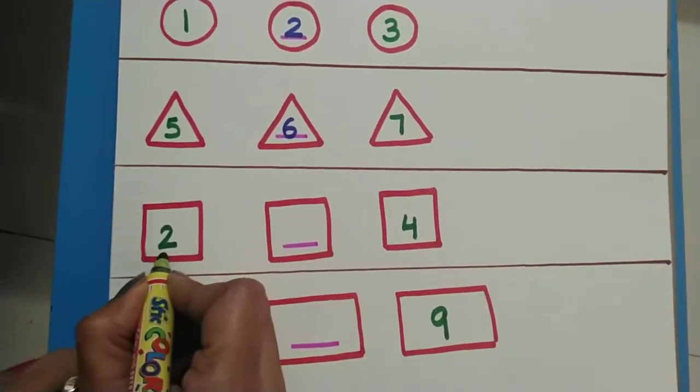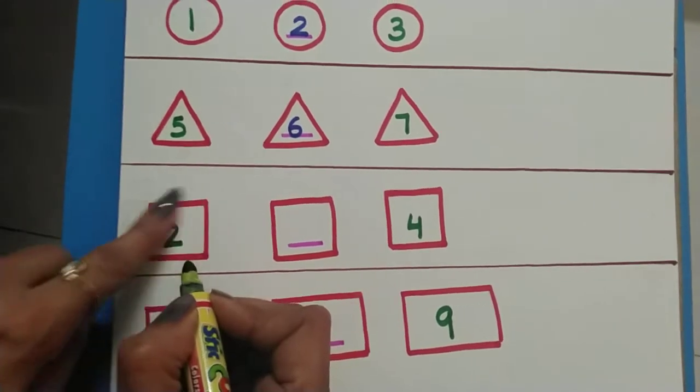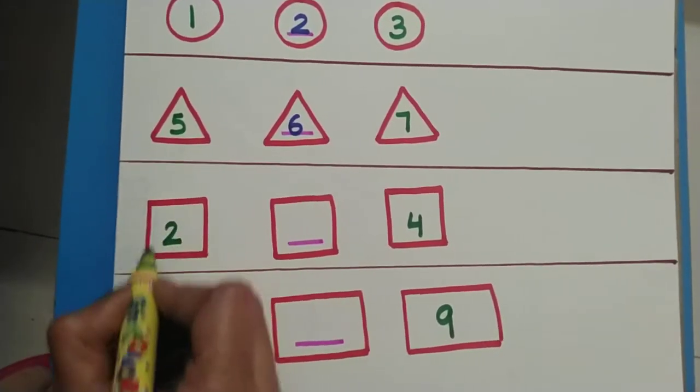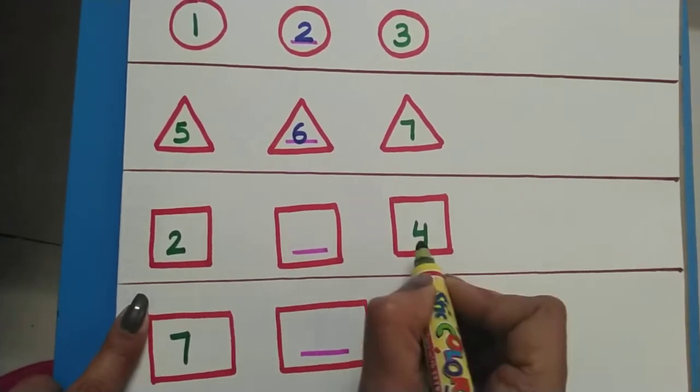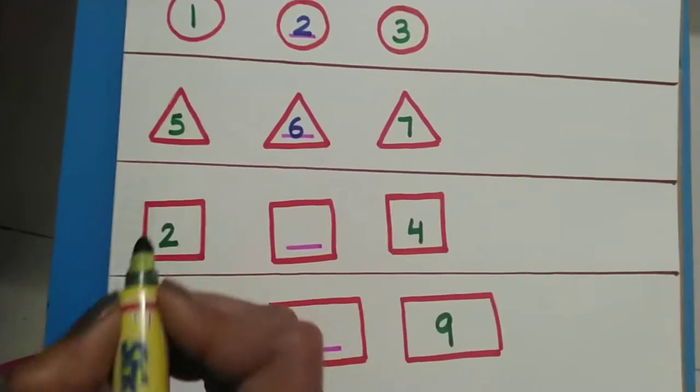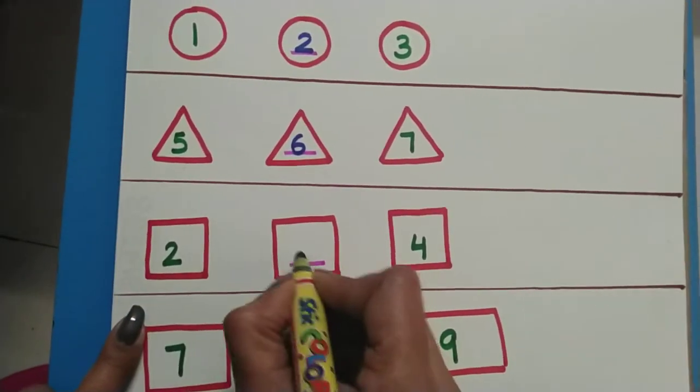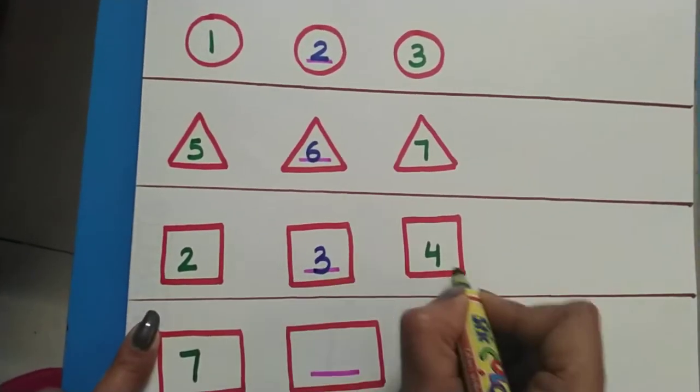Now which number is this? Two. And which shape is this? This is a square. Two. No number is in this box. And this is four. So we will count. Two, three and four.